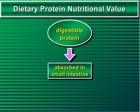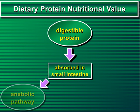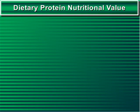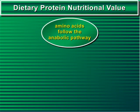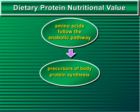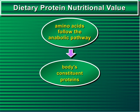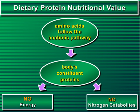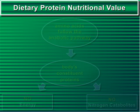Then, those amino acids can follow either the anabolic or the catabolic pathway. When amino acids follow the anabolic pathway, they act as precursors of body protein synthesis, which is their primary function, thus becoming the body's constituent proteins. Throughout the anabolic pathway, no energy or nitrogen catabolites are released.